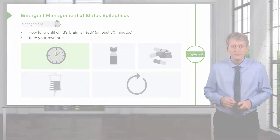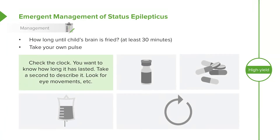Then check the time. We need to know how long this seizure has been going on, and we need to take a second to describe the seizure. Look for eye movements. Is this generalized, or was this focal and then became generalized? It's important to understand all these things so we can make the diagnosis later. Focal seizures are often pathologic and involve a problem in the brain, whereas generalized seizures are more likely to be a seizure disorder, or if the child is febrile, a simple febrile seizure.